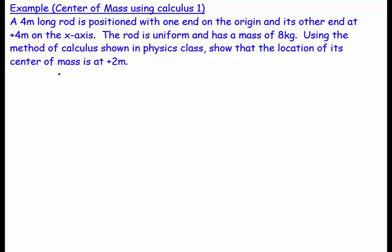Welcome. This question says a 4m long rod is positioned with one end at the origin and the other end at plus 4m on the x-axis. The rod is uniform and has a mass of 8kg. Using the method of calculus as shown in physics class, show the location of its center of mass is at plus 2m.